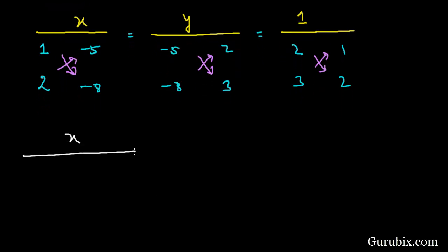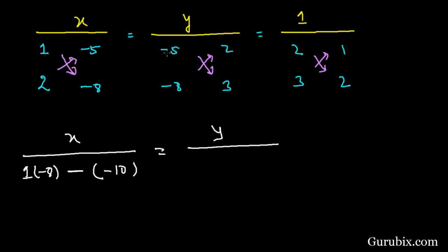For x: we multiply 1 by -8 to get -8, minus the product of -5 and 2 which is -10. For y: we multiply -5 by 3 to get -15, minus the product of -8 and 2 which is -16. For the denominator: we multiply 2 by 2 to get 4, and 3 by 1 to get 3.